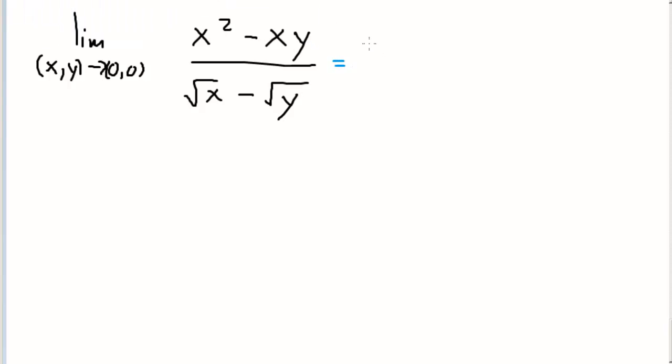So let's factor the numerator. We'll have the limit as x and y go to (0,0). I'll factor out an x and I'll have x(x - y) over square root x minus square root y.